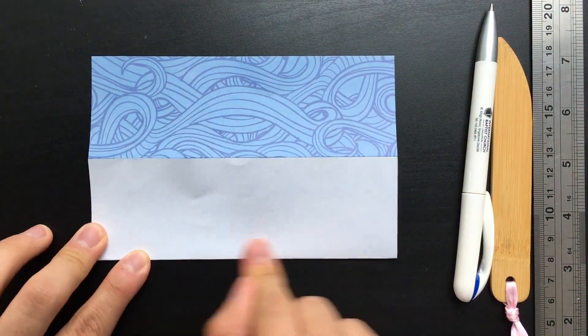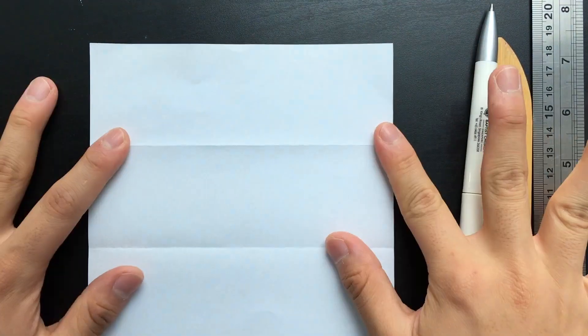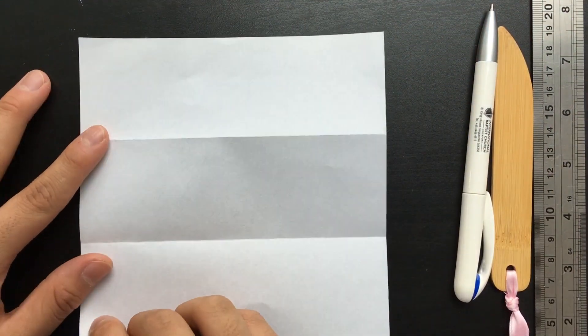Now once you have your paper divided into thirds, what you want to do is take the bottom left corner right here and fold it over to the right hand edge.